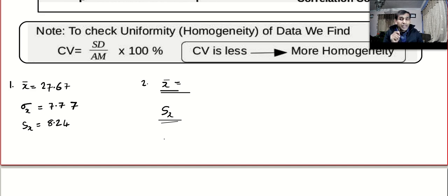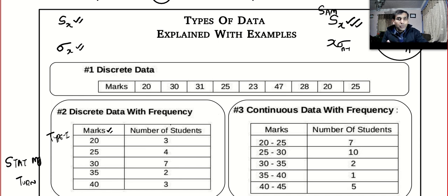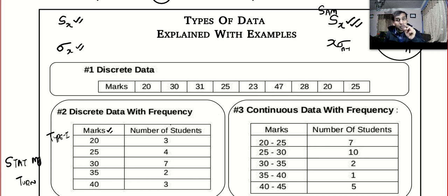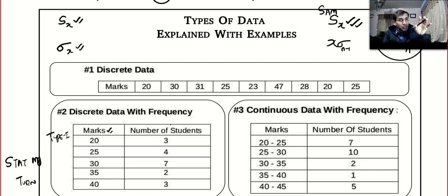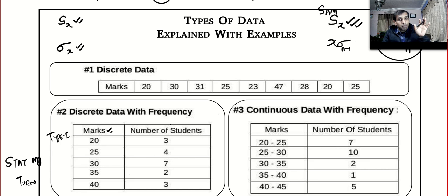Why did I not choose sigma x? Because at the beginning of the video I told you clearly this is a sample — I made the question so I know. In a question paper this will be stated. Unless you are doing a real-life experiment by yourself, you will not know whether it is a sample or population unless otherwise mentioned.